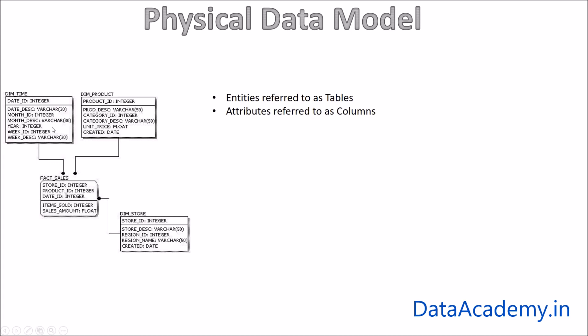And columns. And what we used to call as attributes in the logical data model, now we refer to as columns. So you see, tables and columns are words specific to a database, whereas entities and attributes are specific to a design, a logical data model design. So when we create a physical data model, we should clearly be referring to these as tables and columns.